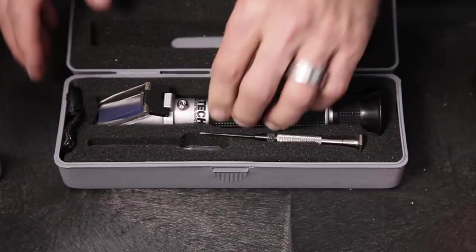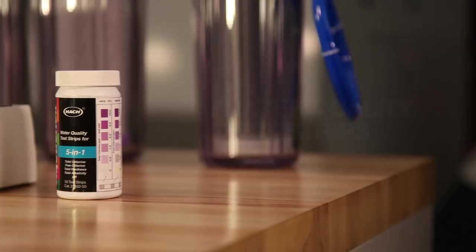What other ways can you check the condition of your coolant? Water quality test strips can be used to check the pH balance and water hardness of your coolant.